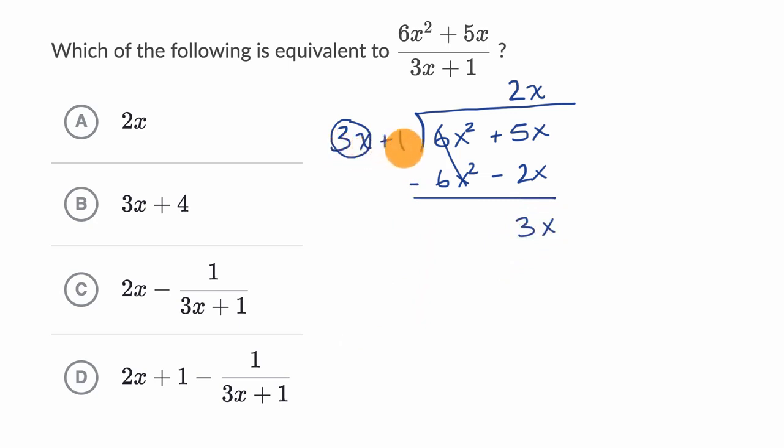Now, how many times does three x plus one go into three x? Well, one way to think about it, three x goes into three x one time. So let's just write that in the zeroth degree column. You could view that as a constant column. One times three x plus one is three x and one.